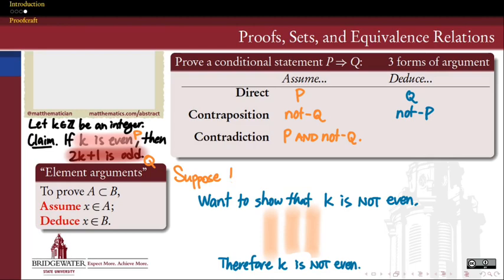So this is nice, because it immediately puts a lot of stuff on the table that you can work with. So in our example, suppose k is even. And what else? 2k plus 1 is not odd. So we get a lot to work with.